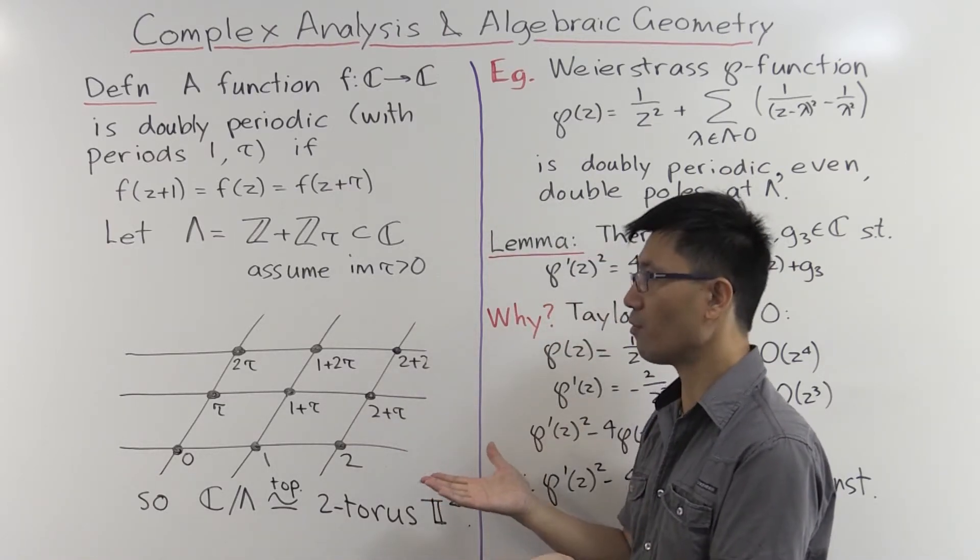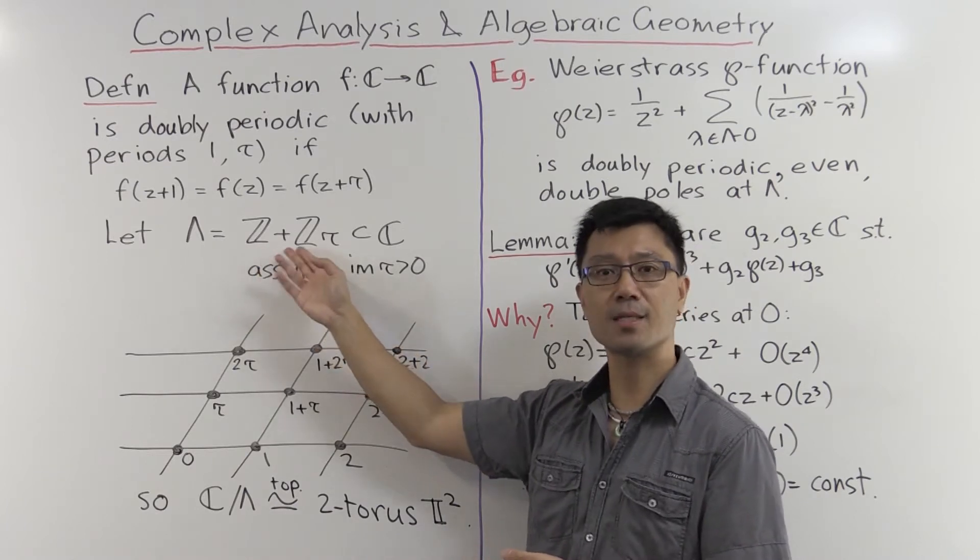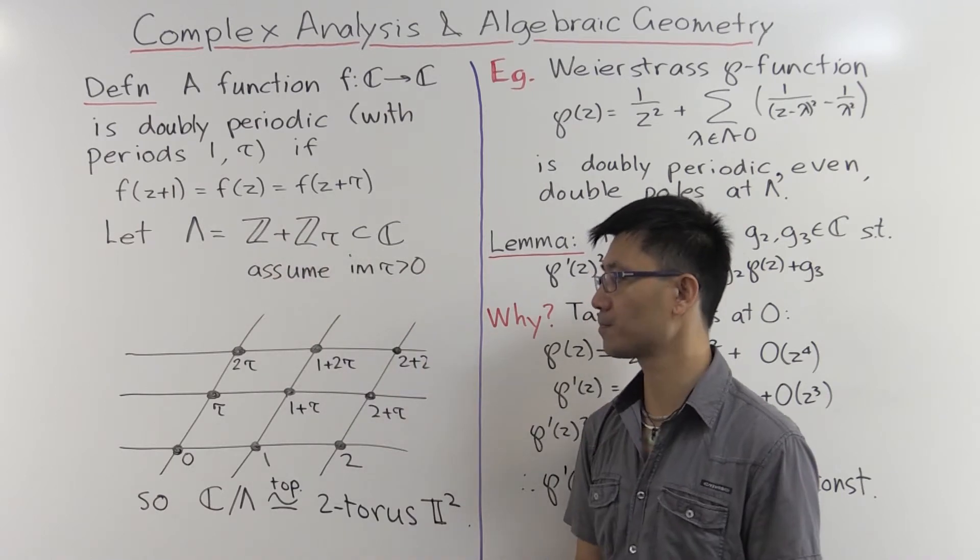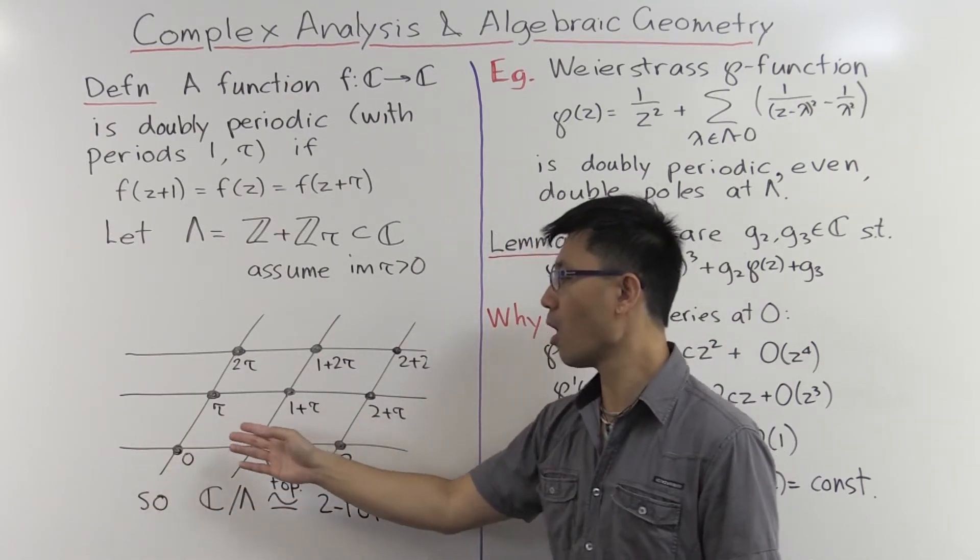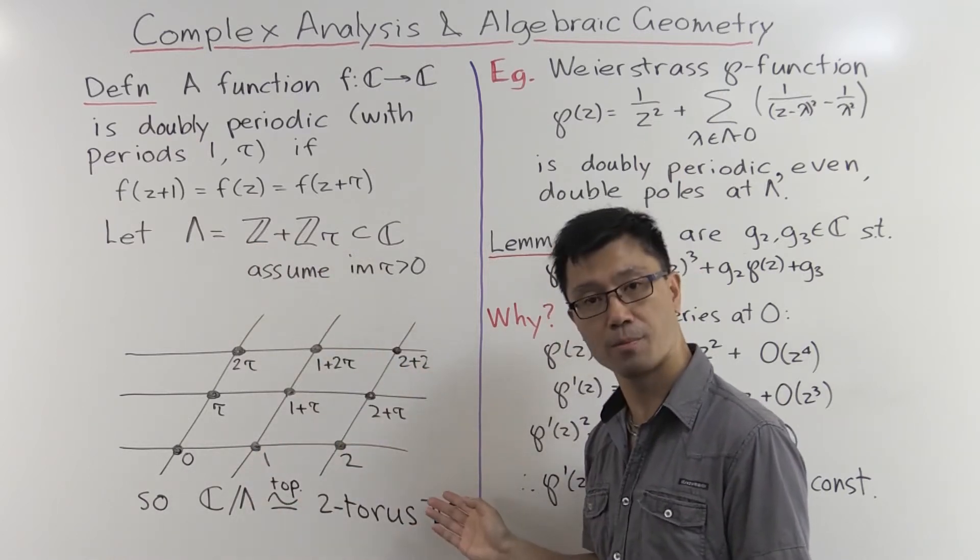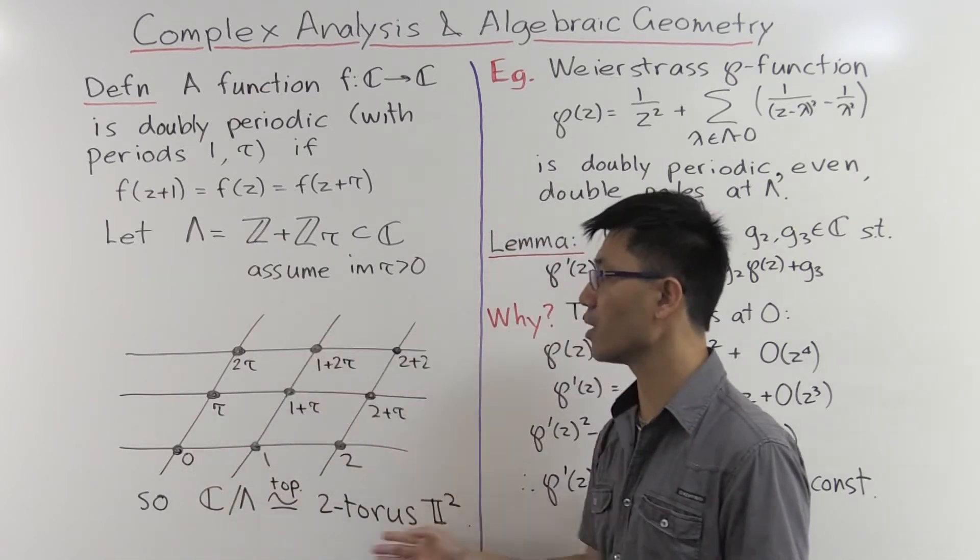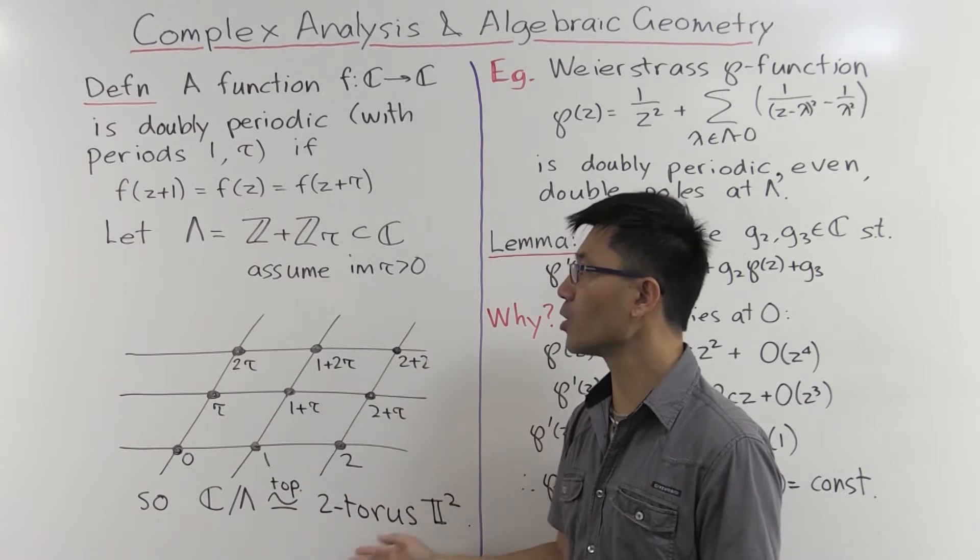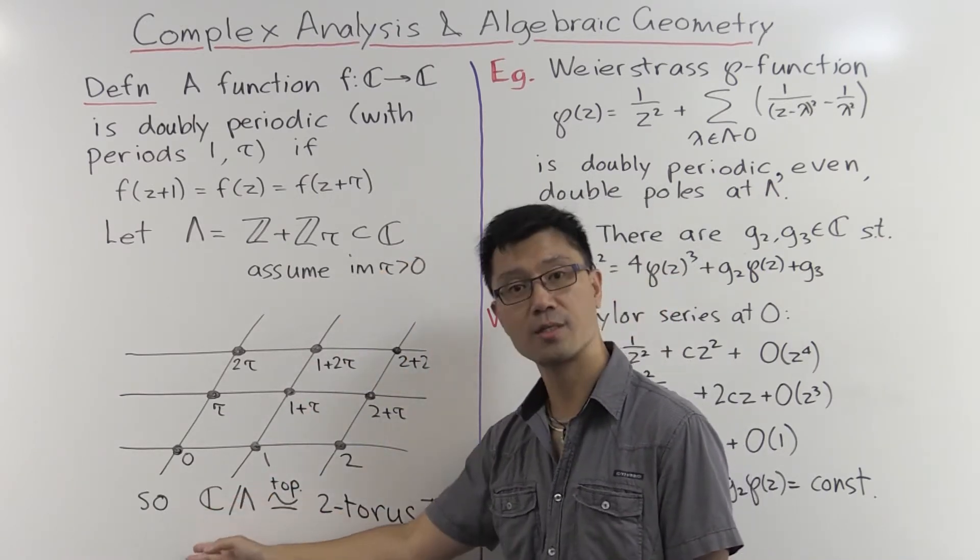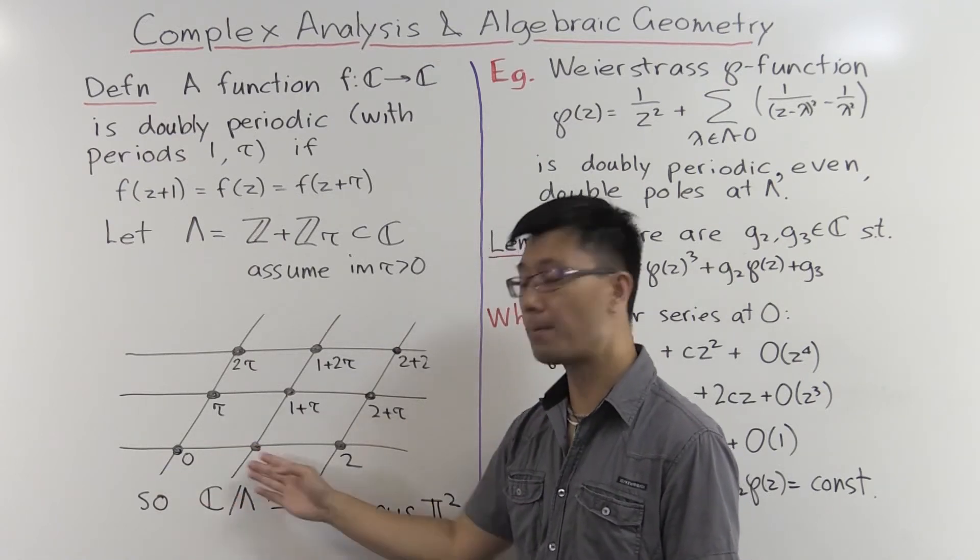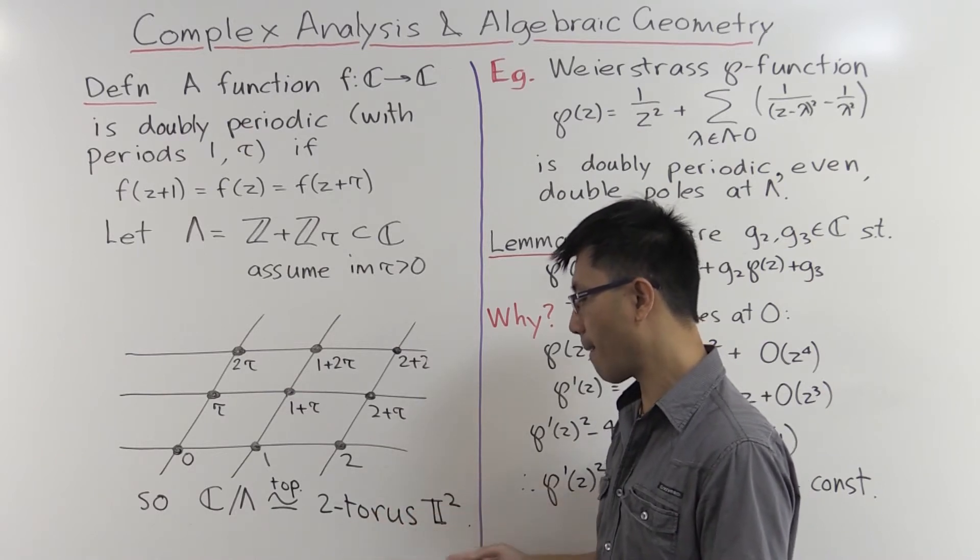To understand this function, it's often useful to consider the following subgroup of the additive group ℂ. It's going to be Λ = ℤ + ℤτ, so just the abelian subgroup generated by 1 and τ. Now let's draw this on the Argand diagram. Of course you have zero, and you also have the integers 1, 2, and so forth. You also have all scalar multiples of τ: τ, 2τ, 3τ, -τ, and so forth, and also sums of them as well. The first point to note is that if you look at this subgroup Λ of ℂ, you can take the quotient ℂ mod Λ. And of course that's a quotient group, but also because ℂ has a topology, you've also got an induced topological space. And that's going to be ℂ mod Λ is the 2-torus.